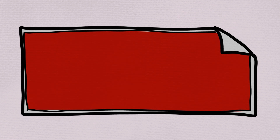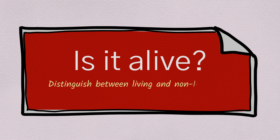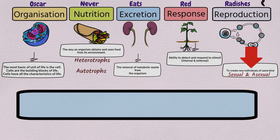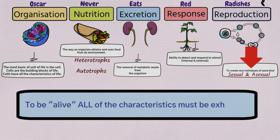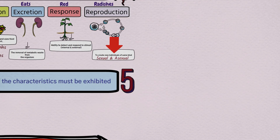Is it alive? Is it a living thing? How do you distinguish between living and non-living entities? You would have to go back to the five characteristics of life. To be alive, all five of those characteristics must be exhibited. You would have to go through each one to see if they are exhibited.